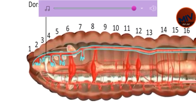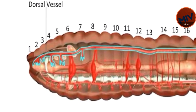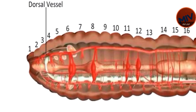The dorsal vessel is the only thick, muscular and contractile vessel. It is present dorsal to the gut through the whole length of the body. Thus, it is the largest sized collecting as well as distributing vessel. Blood flows forward in it.